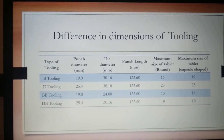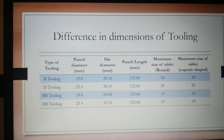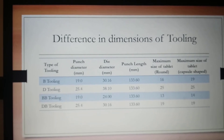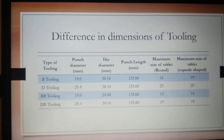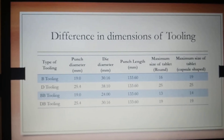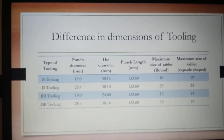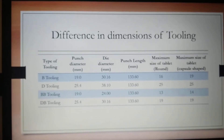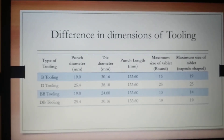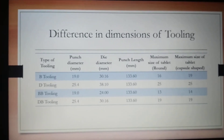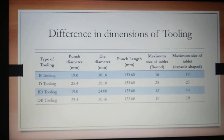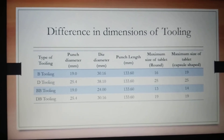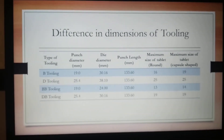In the case of capsule-shaped tablets, you can compress a maximum size of 19 mm with B tooling and 25 mm with D tooling, whereas with BB tooling you can compress 14 mm capsule-shaped tablets. This is a very useful reference to help decide upon the type of tooling to go with.